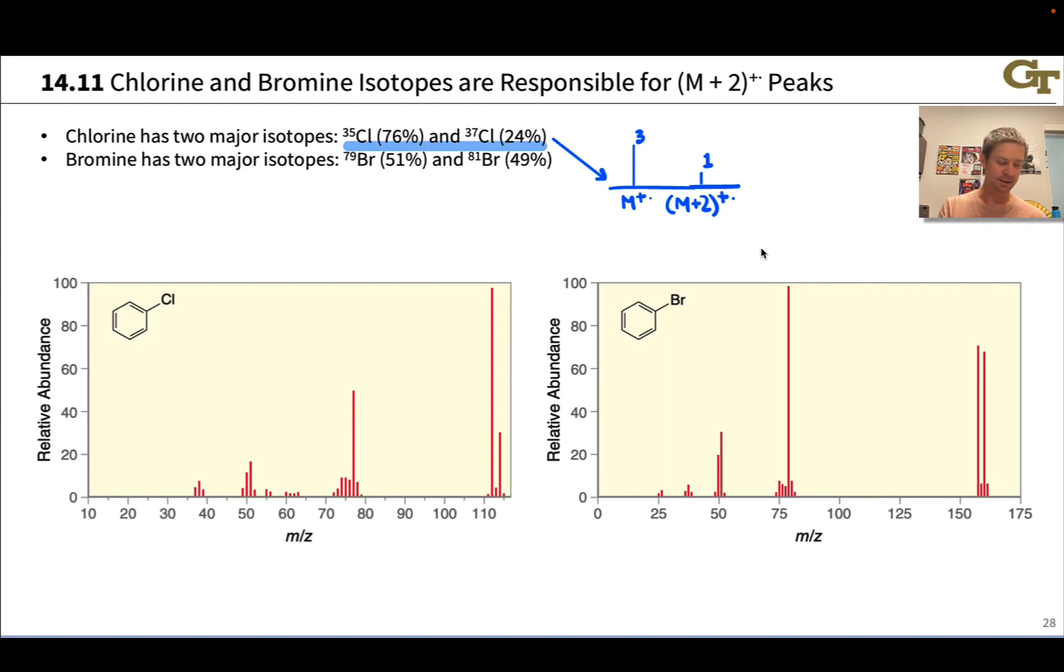For example, here in this chlorobenzene notice we have that three to one ratio for M and M+2, and this is a manifestation of the presence of chlorine in the compound.